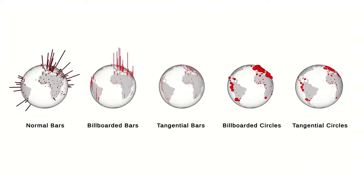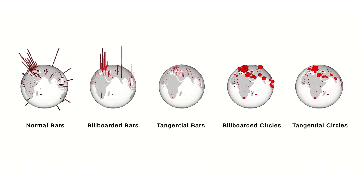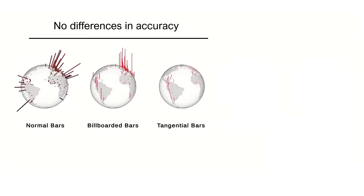We conducted a user study to evaluate these five globe visualization idioms. The results suggest that the accuracy of length proportional visualization is not affected by the direction of visual primitives. We did not find differences in accuracy among normal bars, billboarded bars, and tangential bar idioms.